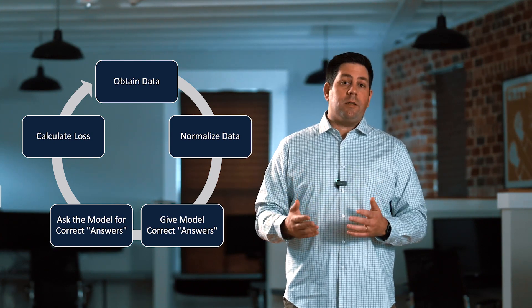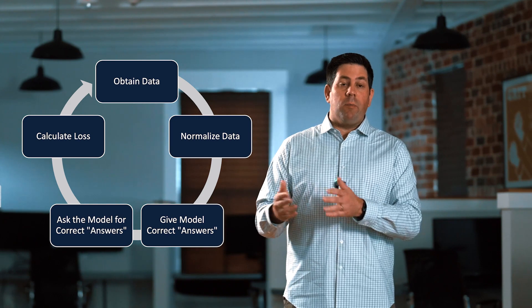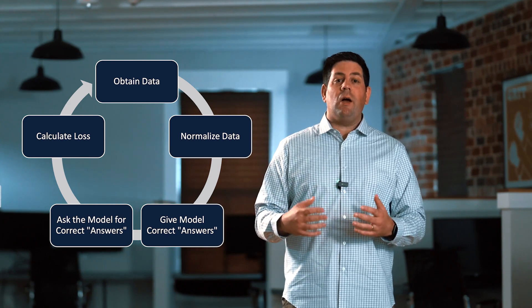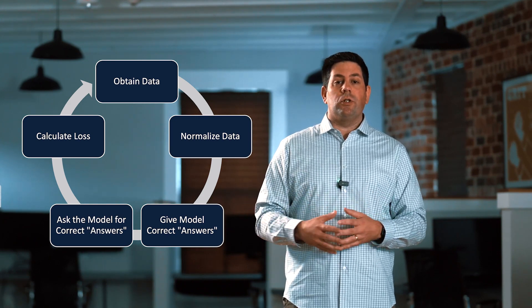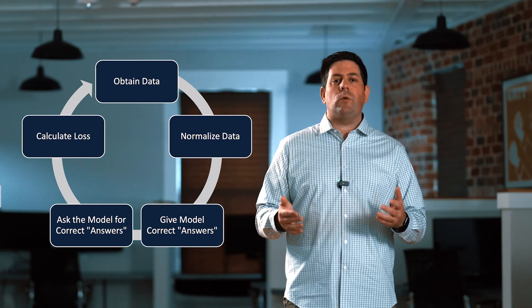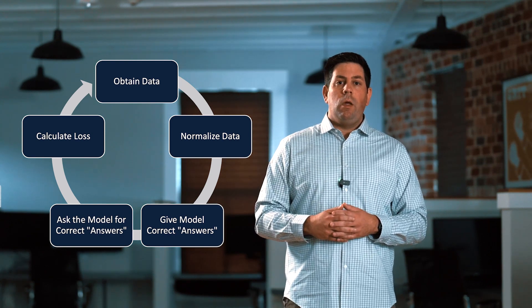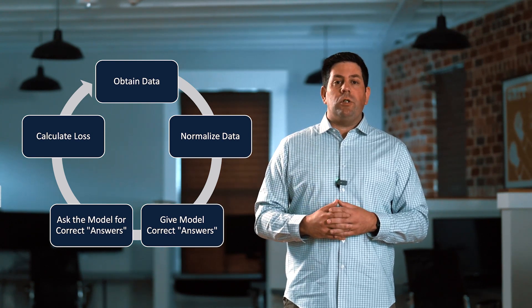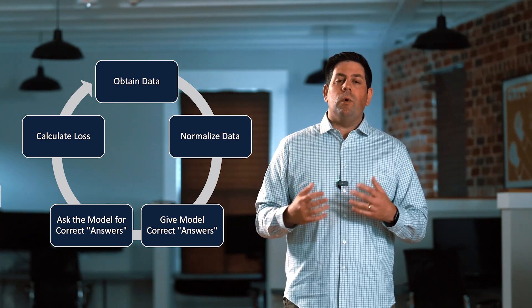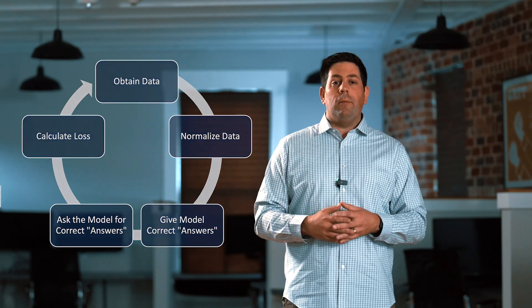Since we already know the answer for that remaining 20%, we can calculate a loss function — so how correct was the model when we asked it for those answers? We calculate that loss function and we say we think we can do better. We adjust some parameters in the model, we run it again, and we continue to do that until we've minimized the loss function.